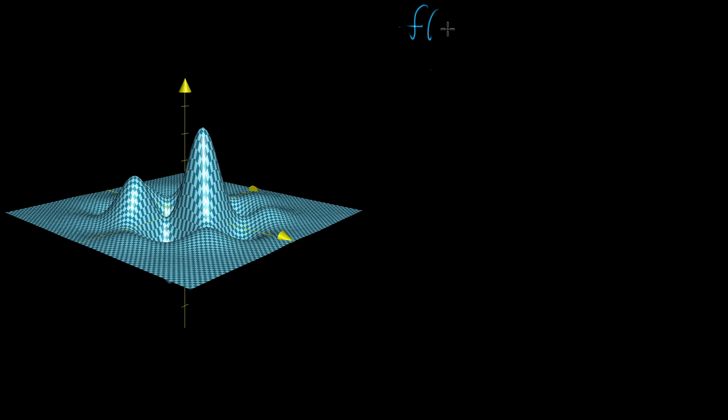When you have a multivariable function, something that takes in multiple different input values and outputs a single number, a very common thing you want to do with an animal like this is maximize it.